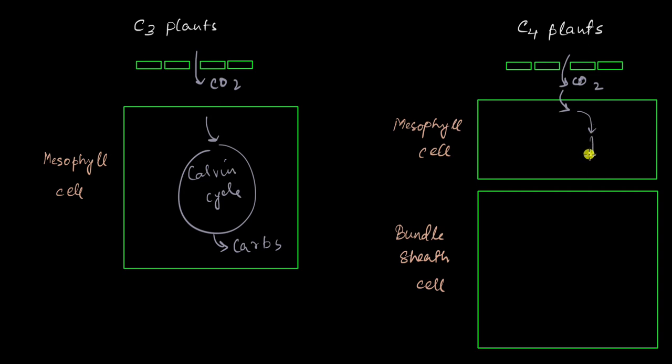So the C4 cycle actually starts in the mesophyll cell and continues in the bundle sheath cell. If you remember, bundle sheath cells are the cells that surround the vascular bundle, that is a bundle that has xylem and phloem.